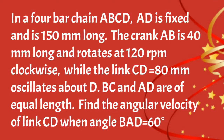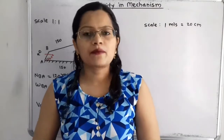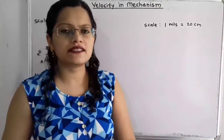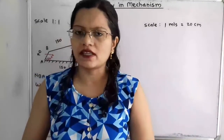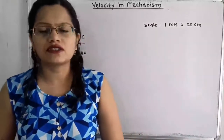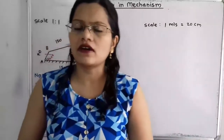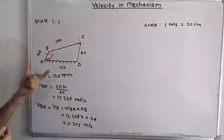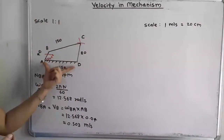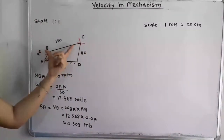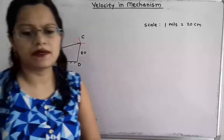So this was the given question. Now, the main important thing is that we have to draw the space diagram with some suitable scale. If we observe the dimensions for this 4-bar mechanism: AD is 150 mm, AB is 40 mm, BC is 150 mm, and CD is 80 mm.